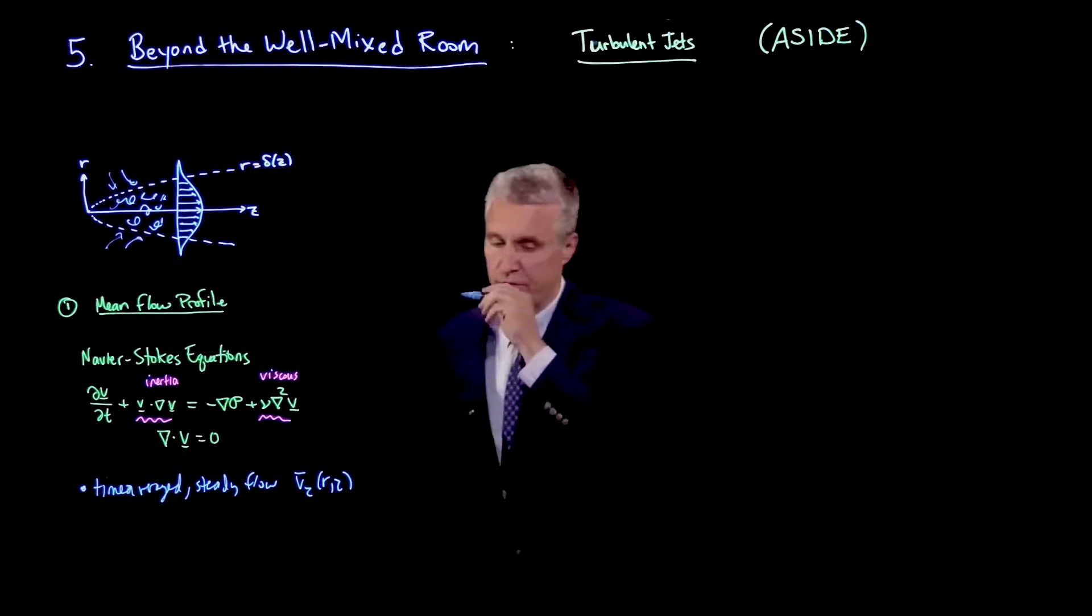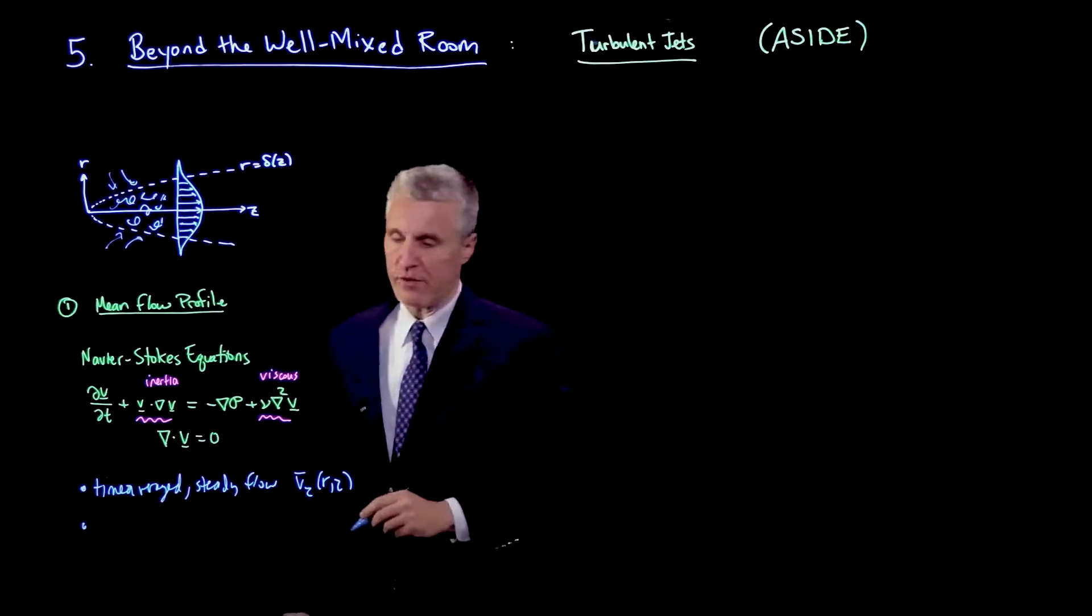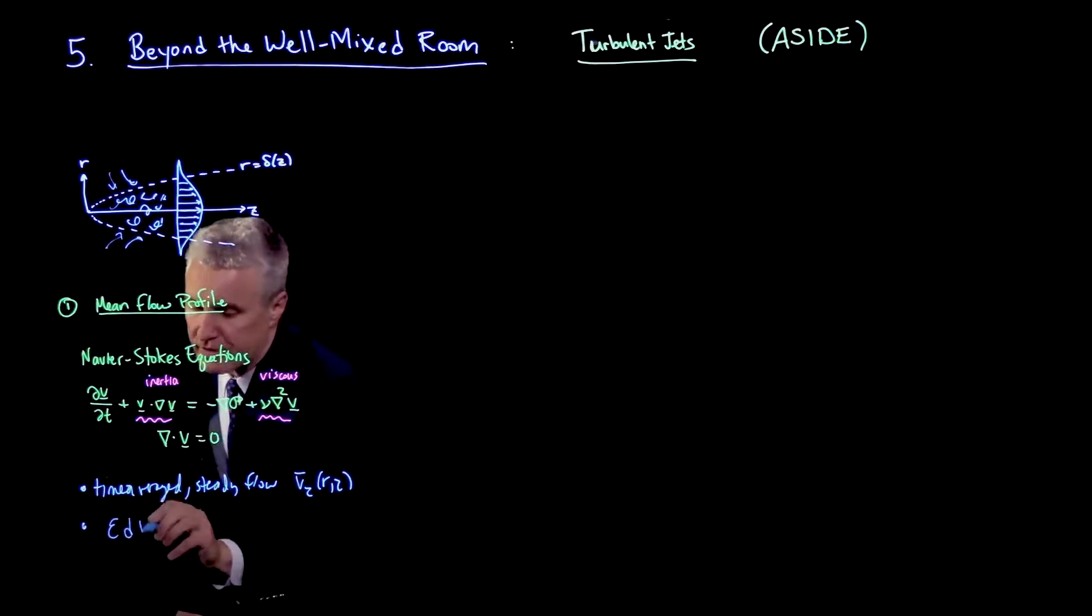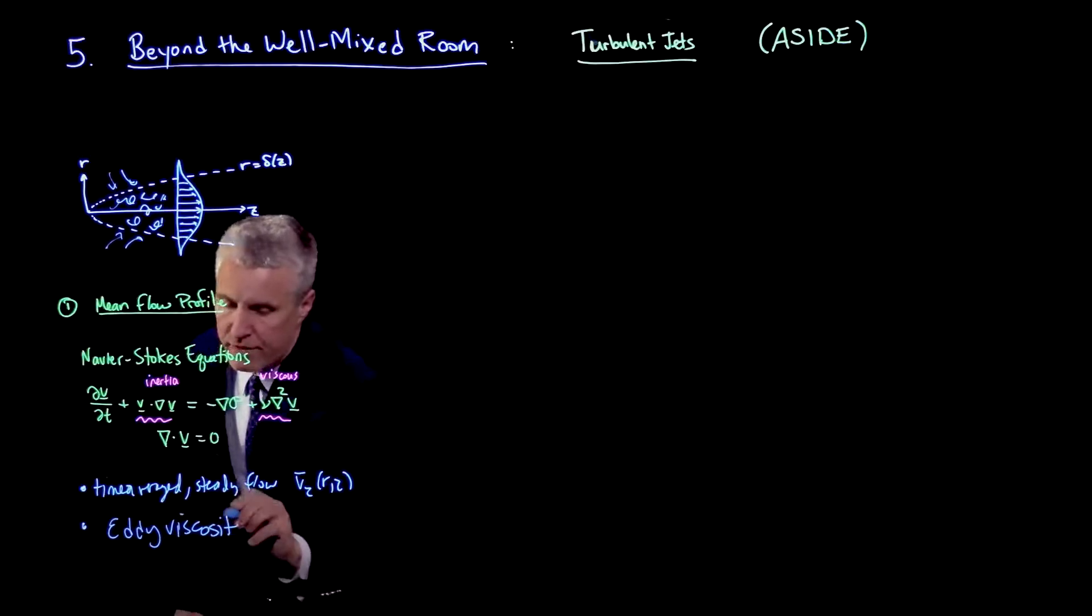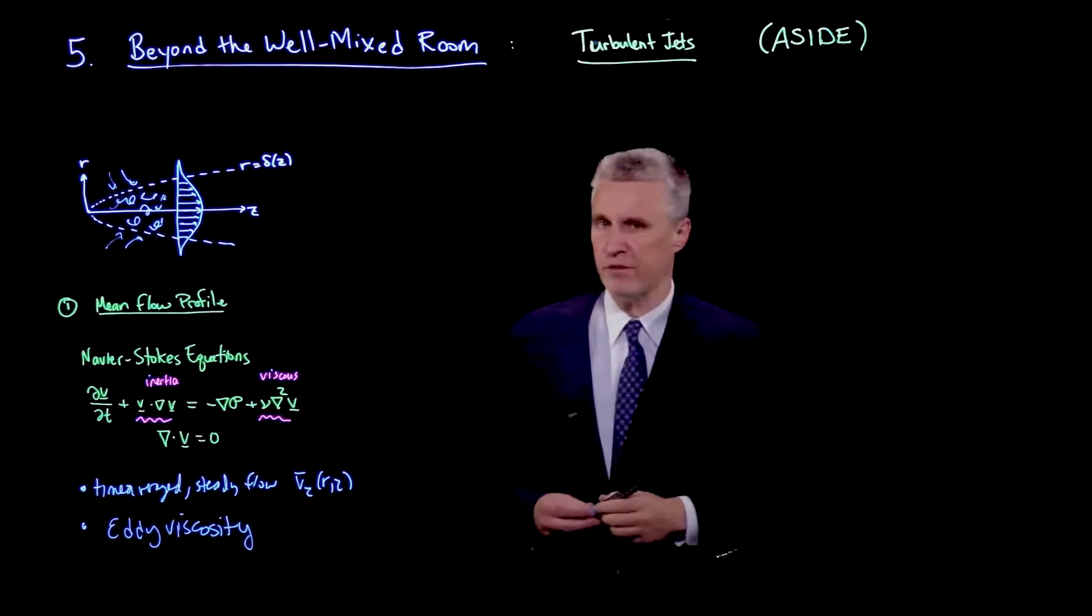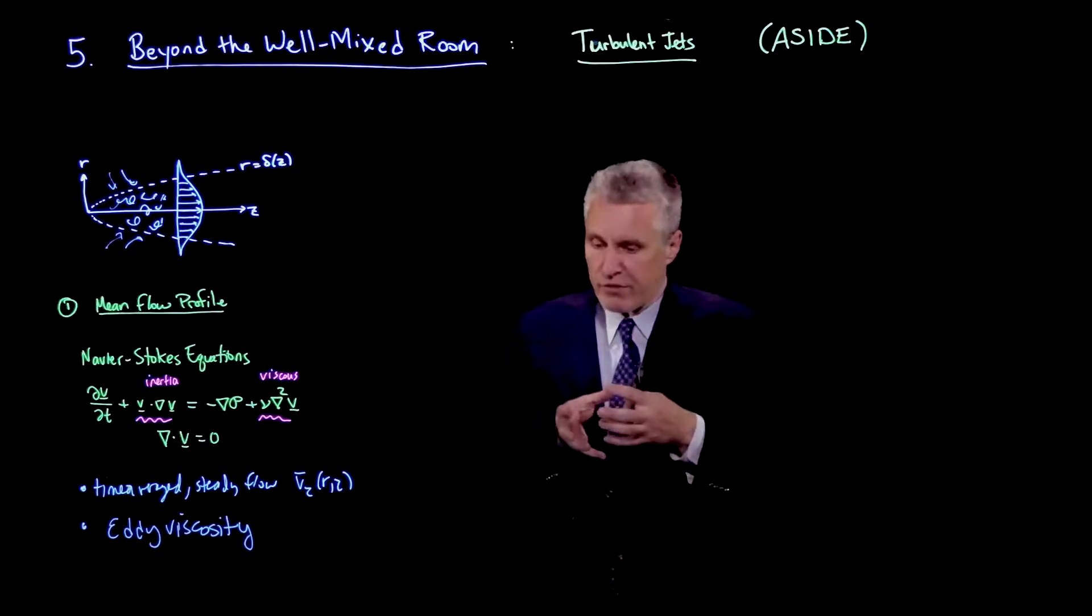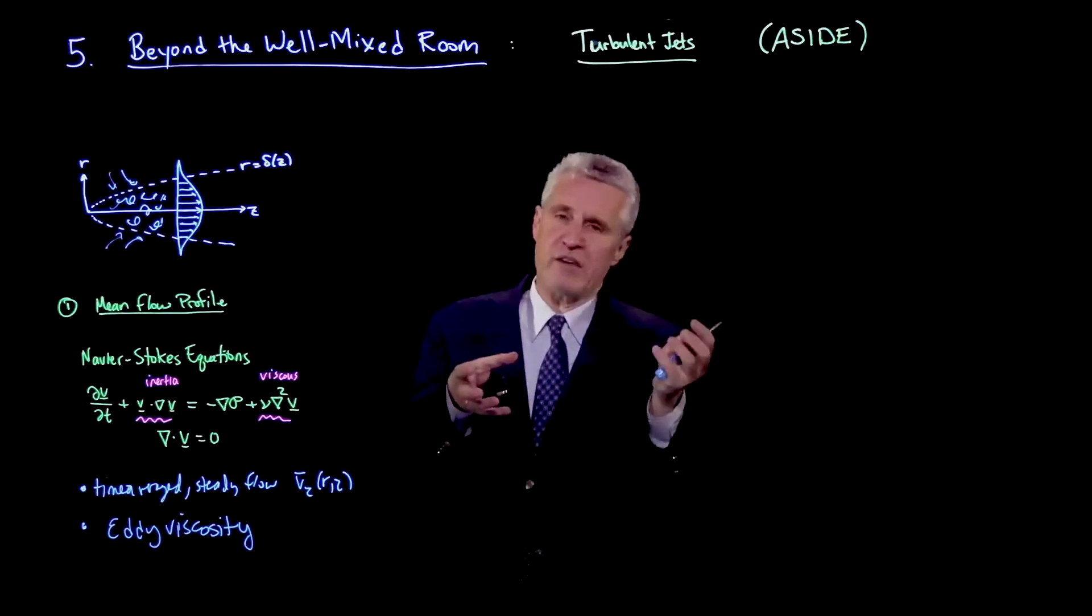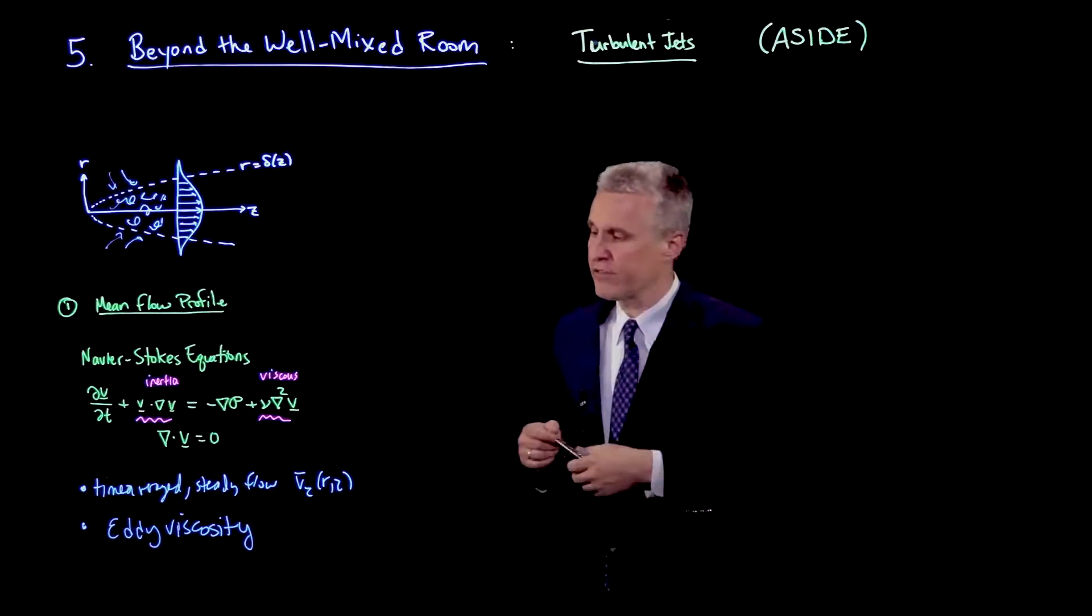And we're also going to, importantly, assume that we have an eddy viscosity. So the kinematic viscosity, nu in the equations, as I've written them here, represents the diffusion of momentum. If a parcel of fluid is moving with a certain momentum, it has a chance of passing that momentum to the neighboring fluid and moving it along with it. And that is accomplished through viscous stresses.